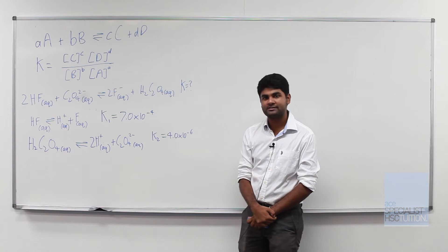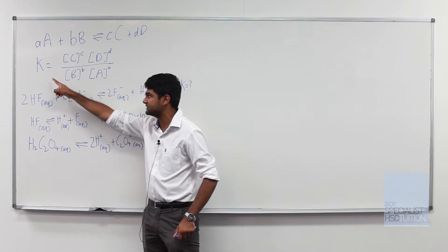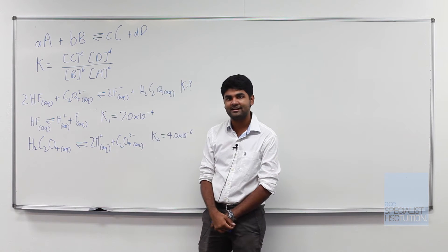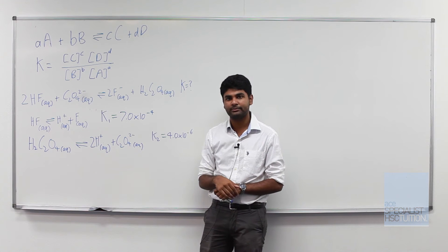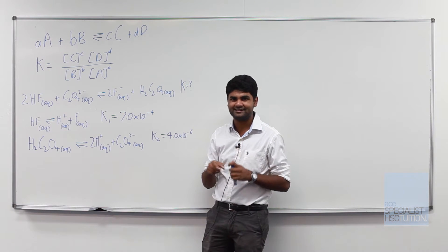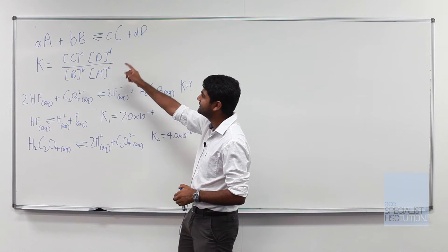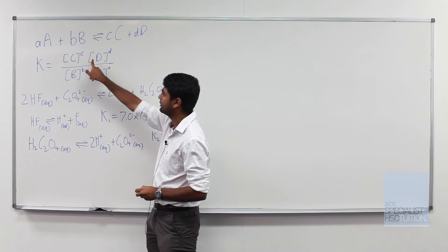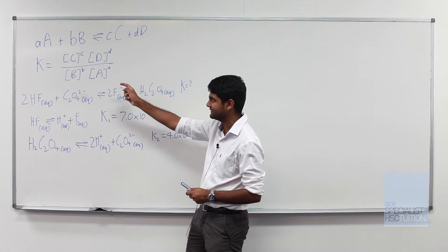Now we're going to go through a new concept today called an equilibrium constant. What an equilibrium constant does is it tells us what is the position of this equilibrium whether it is more towards the products or towards the reactants. The way we do it is the concentration of the products divided by the concentration of the reactants.